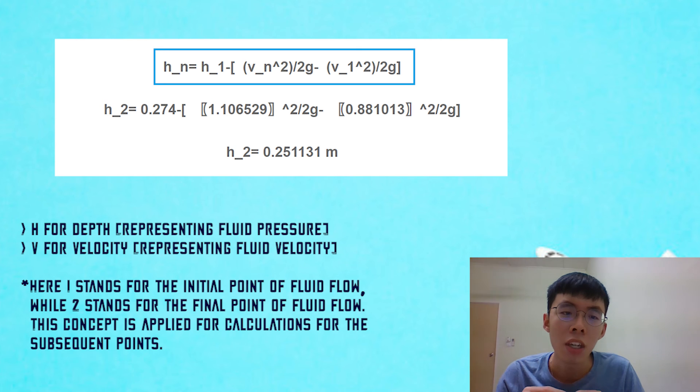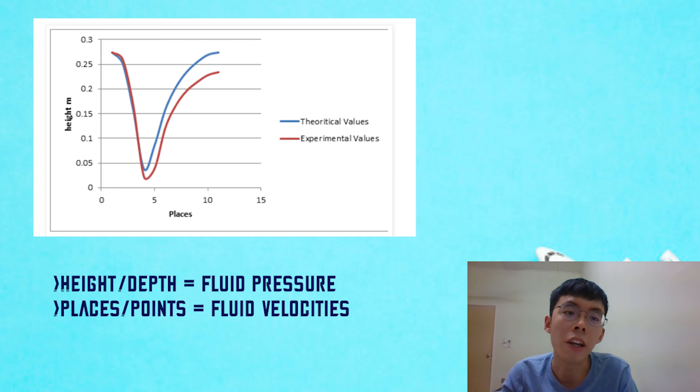And since it is the same fluid, hence the same density, we are left with the equation involving the fluid pressure in terms of depth, as well as fluid velocity. From there, a graph of depth or height against different points along the fluid flow can be plotted. The depth or height represents the fluid pressure, while the different points represent different velocities along the flow.